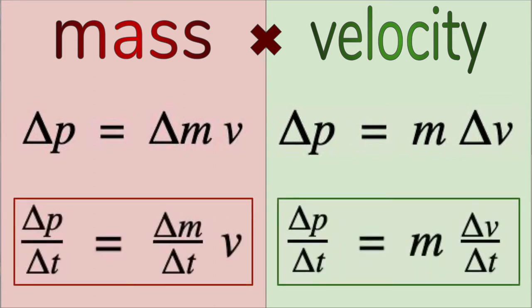And this gives us two ways to work out the rate of change of momentum. On the left, it's rate of change of mass times constant velocity. And on the right, it's constant mass times rate of change of velocity, which looks familiar because that's acceleration.